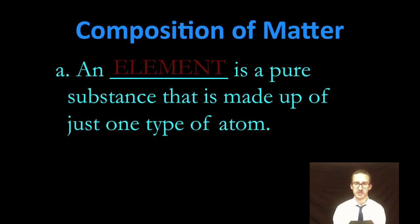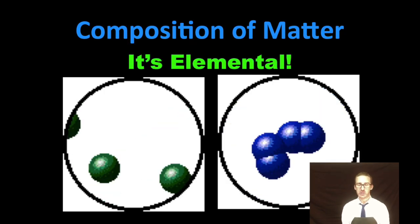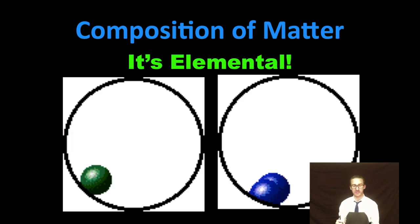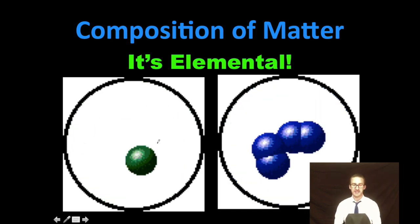The first type is an element. This is made up of just one type of atom. So as you take a look at your screen, you've got two particle representations of elements. Now, as you look at the image on your left, this one seems pretty obvious that it's made up of one type of atom. It's just this green type. It's a special type of element. It's called a diatomic element.